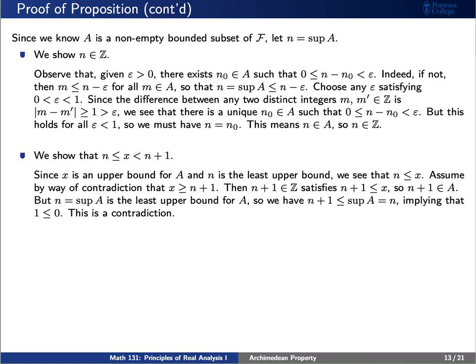Next, we show n is less than or equal to x is less than n plus 1. Since x is an upper bound for A and n is the least upper bound, n is less than or equal to x. It suffices to show n plus 1 is greater than x. Assuming by contradiction that n plus 1 is less than or equal to x, then n plus 1 is in A — but this contradicts n being the least upper bound, since n cannot be greater than or equal to n plus 1. Hence the contradiction.